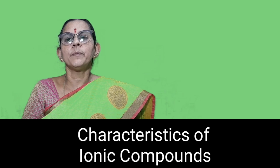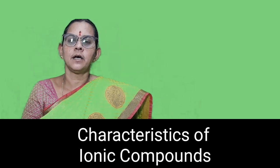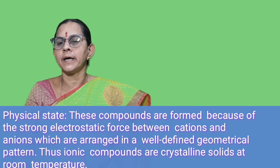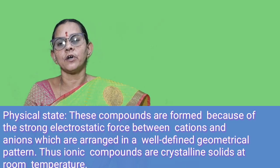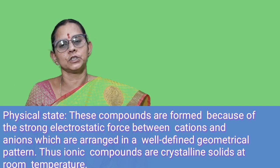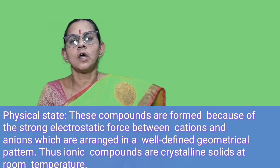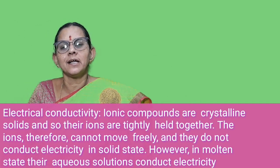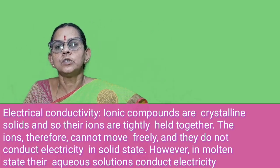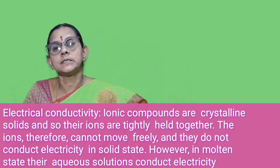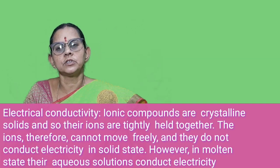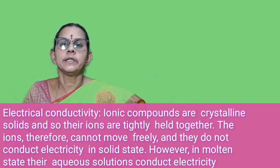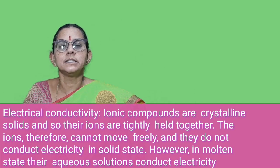Ionic compounds have generalized characteristic features. First, looking at physical state — they are compactly packed and held together by strong electrostatic force, so ionic compounds are all crystalline solids. Regarding electrical conductivity — in solid state they are closely bound together, so they normally don't conduct electricity. But in aqueous state, when dissolved, the aqueous solution of ionic compounds conducts electricity because they have charged particles — cations and anions. So they are good conductors in aqueous solution.